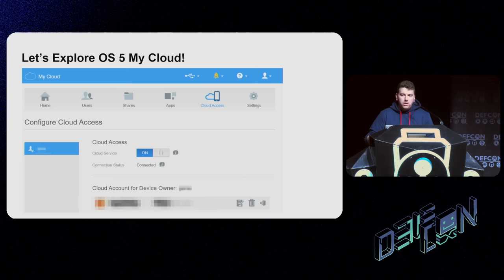With full impersonation capability, we told the cloud 'we are this real device — please change the IP address you think I'm at to a different one,' redirecting users to our command-and-control server instead of the real device. Because we fully impersonated the device — we had all the secrets, tokens, serial number, and MAC address — the server trusted us and relayed users to our C&C. Again we received their authentication tokens and were able to access the real device on their behalf.